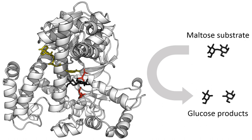An important function of enzymes is in the digestive systems of animals. Enzymes such as amylases and proteases break down large molecules — starch or proteins respectively — into smaller ones so they can be absorbed by the intestines. Starch molecules, for example, are too large to be absorbed from the intestine, but enzymes hydrolyze the starch chains into smaller molecules such as maltose and eventually glucose, which can then be absorbed. Different enzymes digest different food substances. In ruminants, which have herbivorous diets, microorganisms in the gut produce another enzyme, cellulase, to break down the cellulose cell walls of plant fiber.